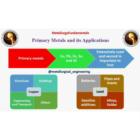Primary metals are copper, lead, zinc, tin and nickel. These metals are extensively used in our daily life and are second in importance to iron. Applications of copper metal are in electricals, buildings, engineering and transport — specially used in wires and for making brass and bronze.